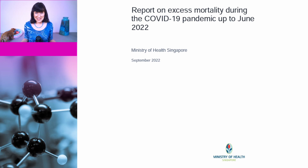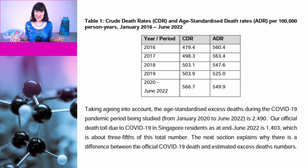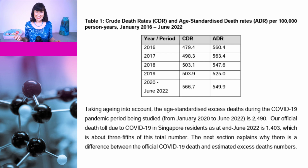This is a report from Singapore entitled 'Singapore Report on Excess Mortality During the COVID-19 Pandemic up to June 2022,' prepared by the Ministry of Health in Singapore. The first thing they did was convert the crude death rate to an age-standardised death rate, which is important as Singapore's population is ageing, meaning increases in mortality are expected and you need to adjust for this. After taking this into account, there were 2,490 excess deaths during the COVID-19 pandemic from January 2020 to June 2022. The official COVID death toll during the same period was 1,403, which is about 60% of the excess deaths.